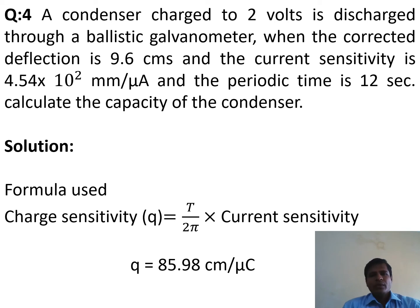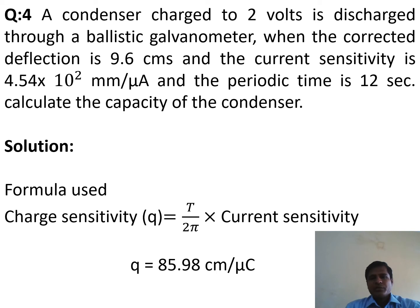Question number 4: A condenser charged to 2 volts is discharged through a ballistic galvanometer. The corrected deflection is 9.6 centimeters, the current sensitivity is 4.45 × 10² millimeters per microampere, and the periodic time is 12 seconds. Calculate the capacity of the condenser. The formula used is: charge sensitivity Q = (T / 2π) × current sensitivity.